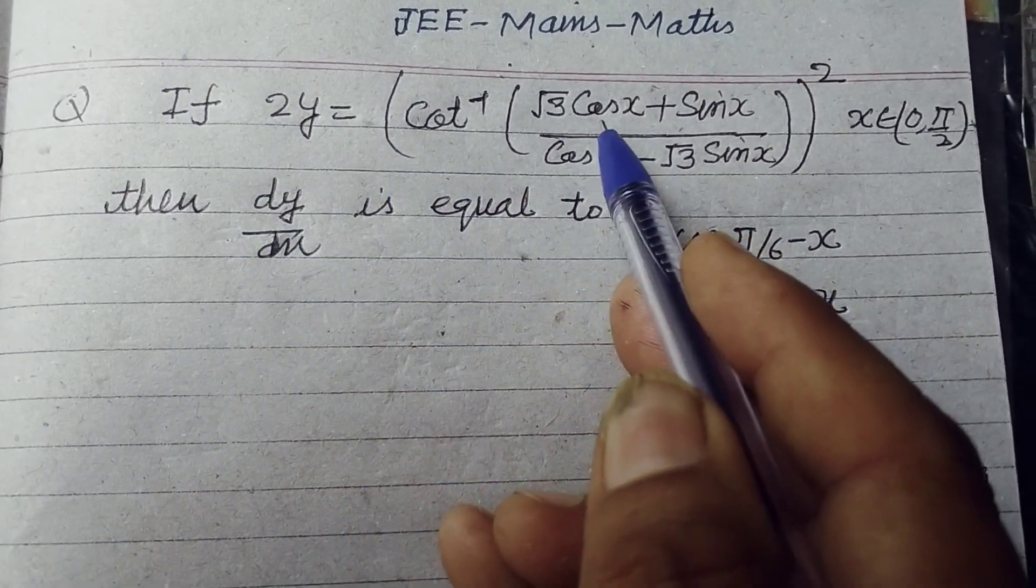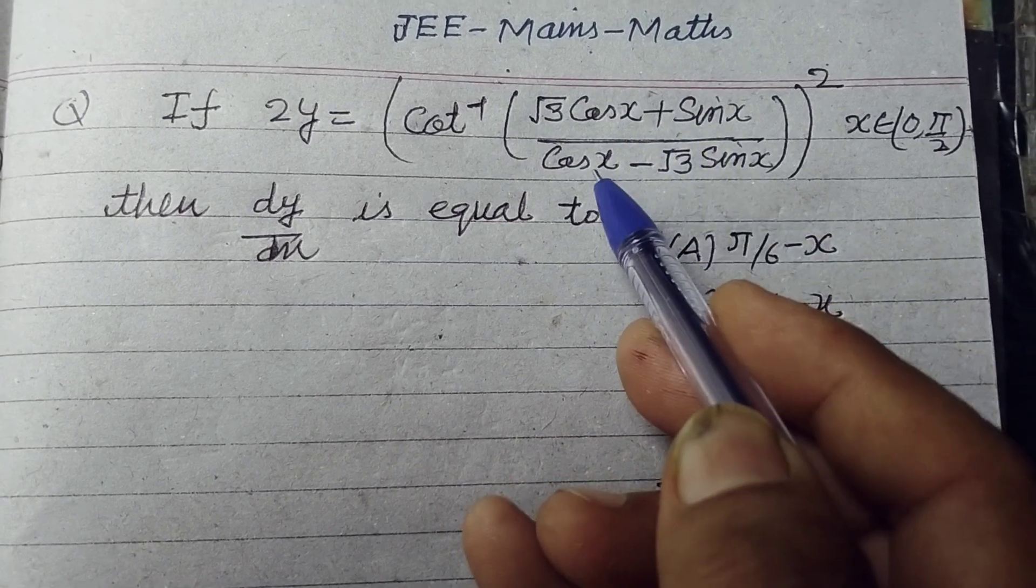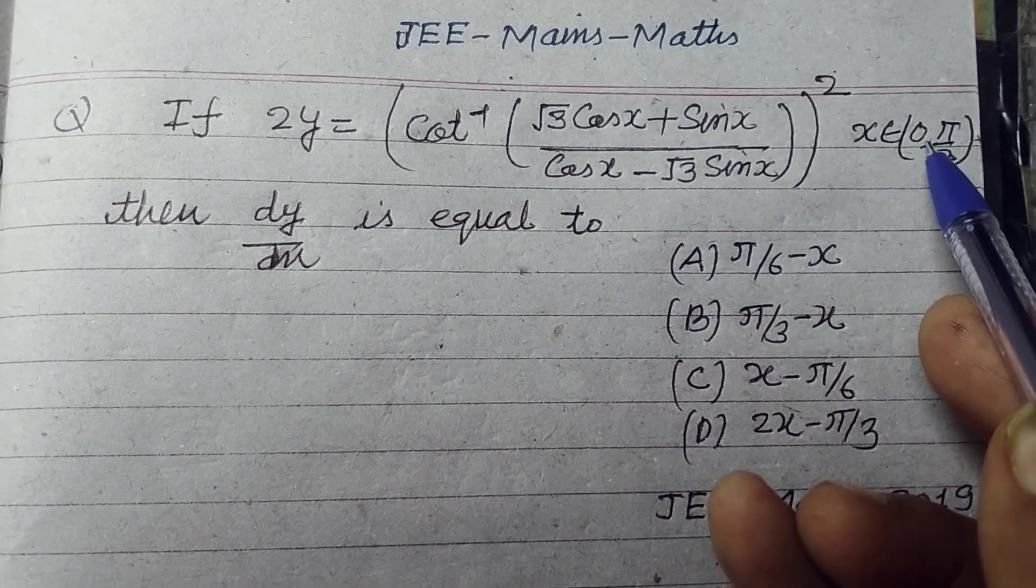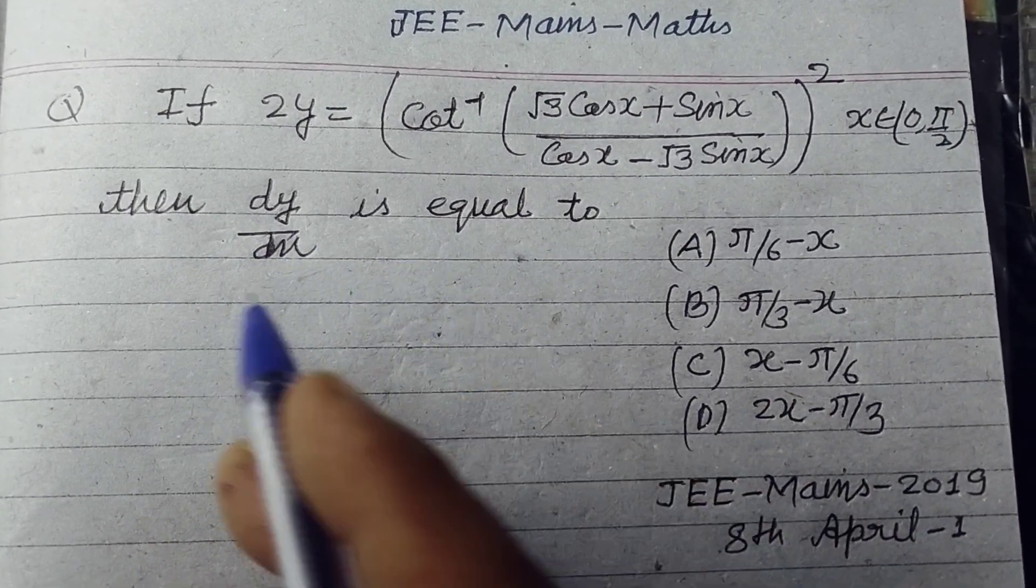If 2y is equal to cot inverse of √3 cos x plus sin x upon cos x minus √3 sin x whole square, x belongs to 0 to π/2, then dy/dx is equal to?